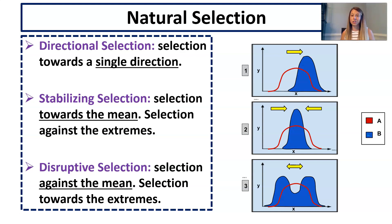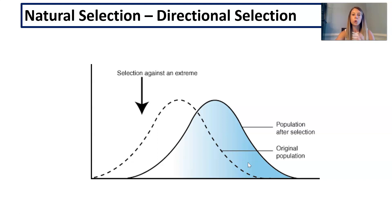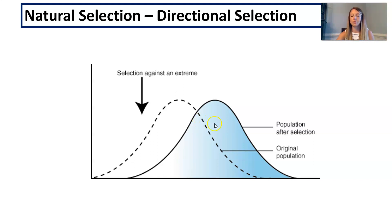Disruptive selection is the opposite of stabilizing selection — you have selection against the middle and instead selection towards both of the extremes. Take a second to pause on these slides and get your graphs copied down. Keep in mind, in all your graphs the dotted line represents the original population, which shows that some members will have one extreme trait, some the other extreme, and the majority will fall somewhere in the middle.